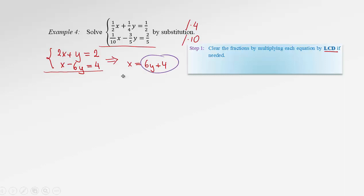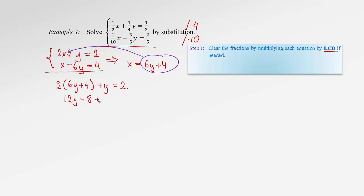That will be our substitution expression, which we plug into the first equation instead of x. So we rewrite the first equation as 2 times (6y plus 4), plus y equals 2. We obtain an equation in one variable, easy to solve for y. Multiply the bracket by 2: we have 12y plus 8, plus y equals 2. Collecting like terms gives 13y, and 2 minus 8 is negative 6. After division by 13, we obtain y equals negative 6 thirteenths.